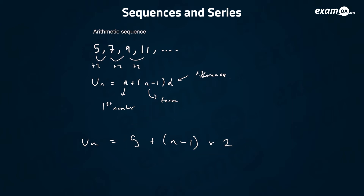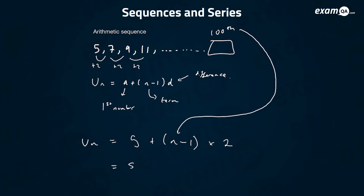So what was the point of the nth term? We might want to work out what the hundredth term is, right? We haven't got time to write out all the numbers. So for the hundredth term, we just plug in n equals 100. So you get five plus (100 minus 1) times two.